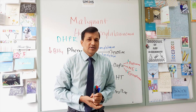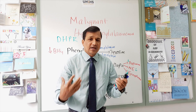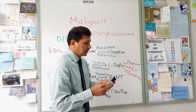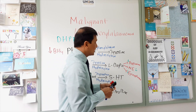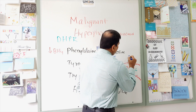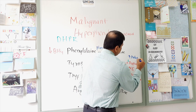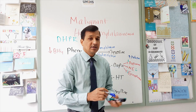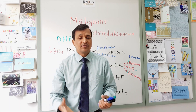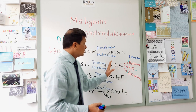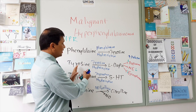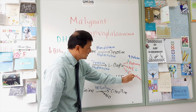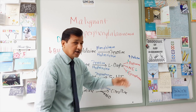Notably, dopamine in the nervous system acts as an inhibitor of prolactin release. When dopamine is decreased in malignant hyperphenylalaninemia, this leads to elevation of prolactin — an important point to remember. So the net effect is decreased dopamine, decreased norepinephrine, decreased epinephrine, and increased prolactin.